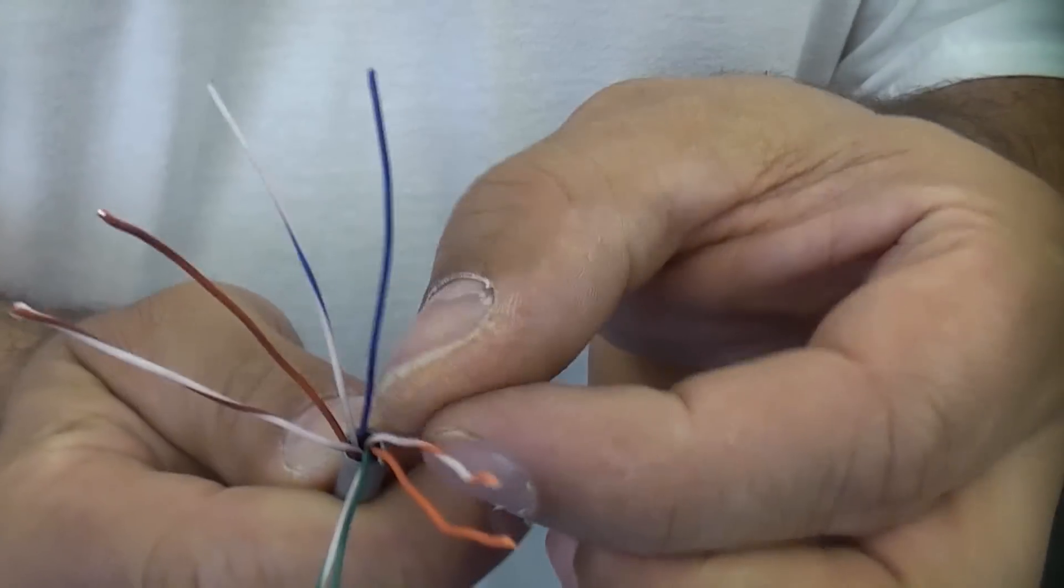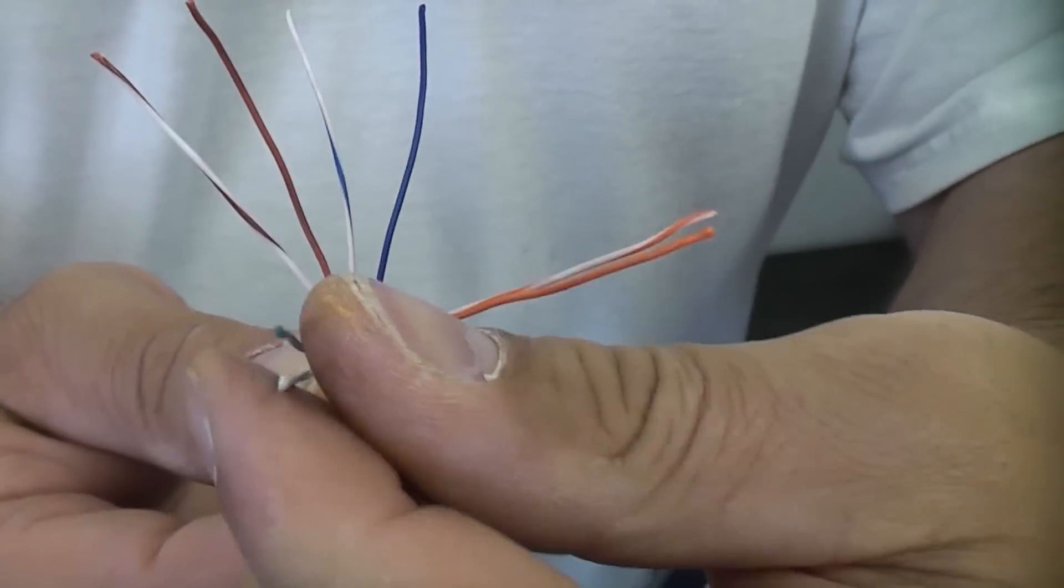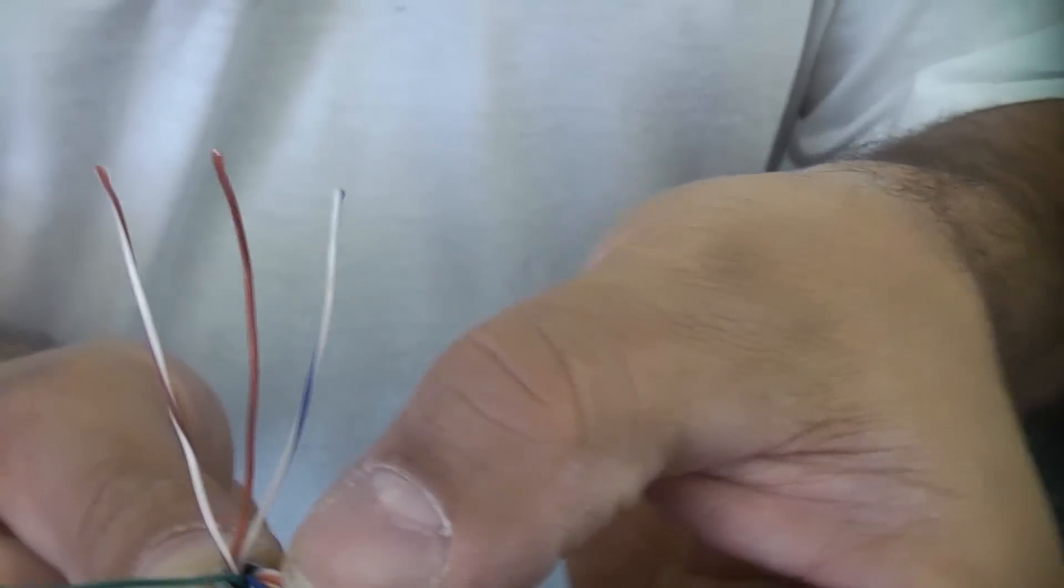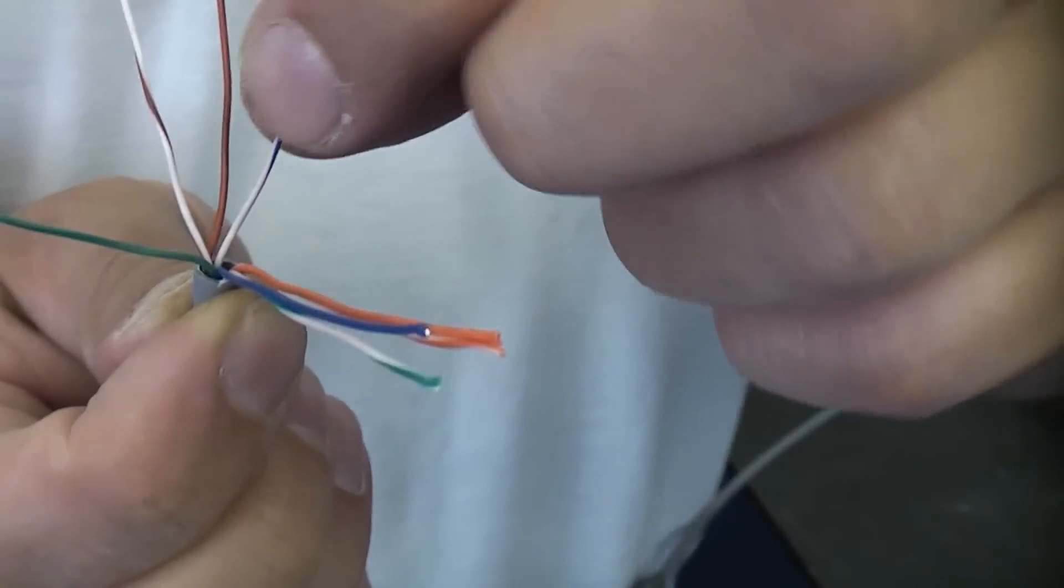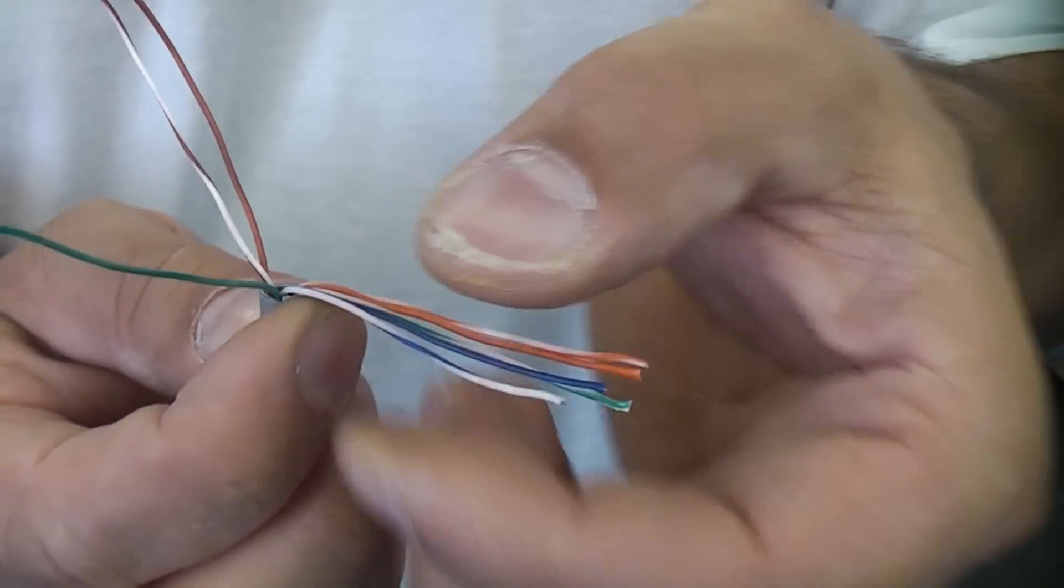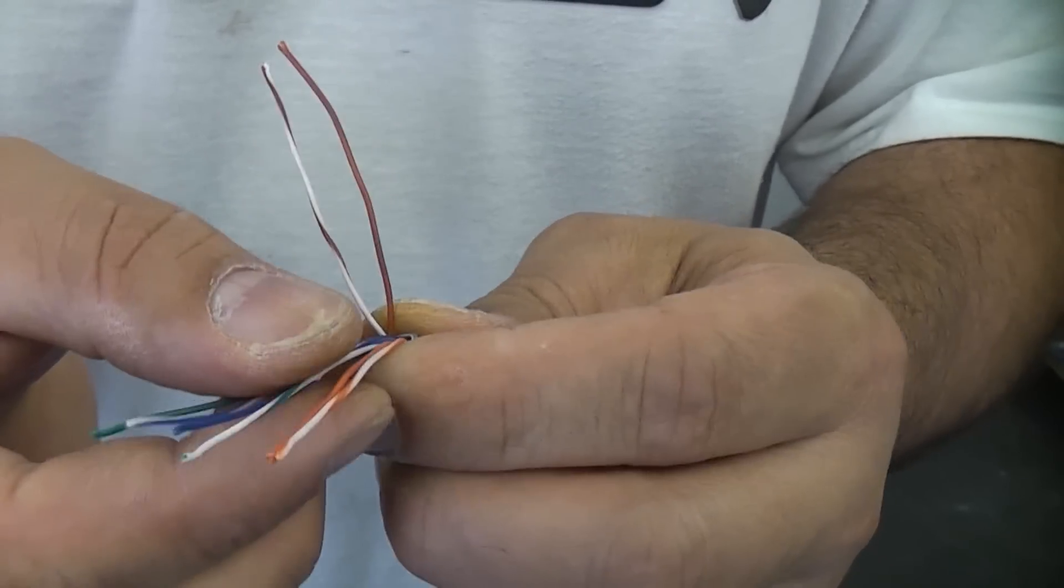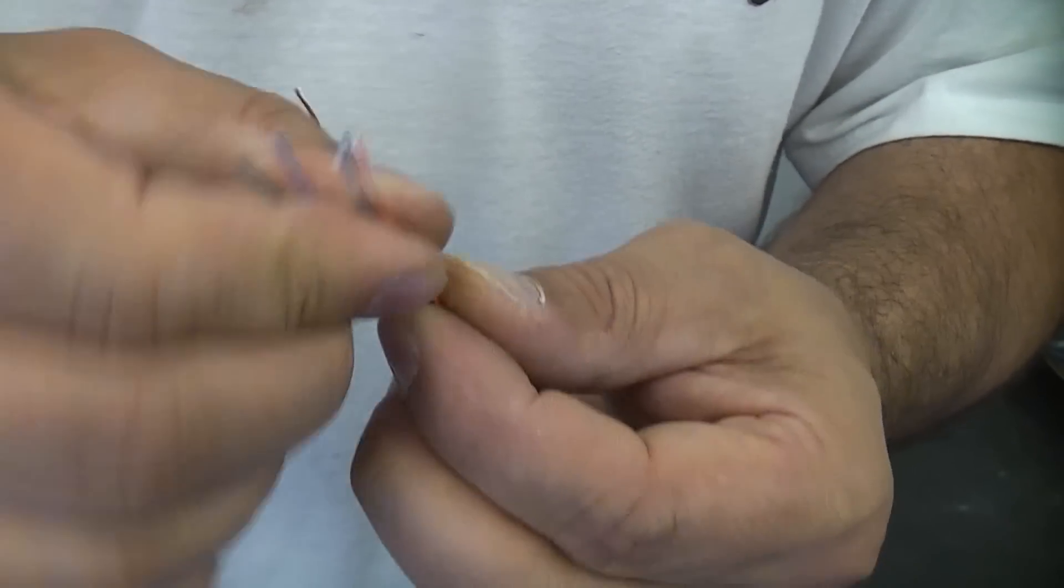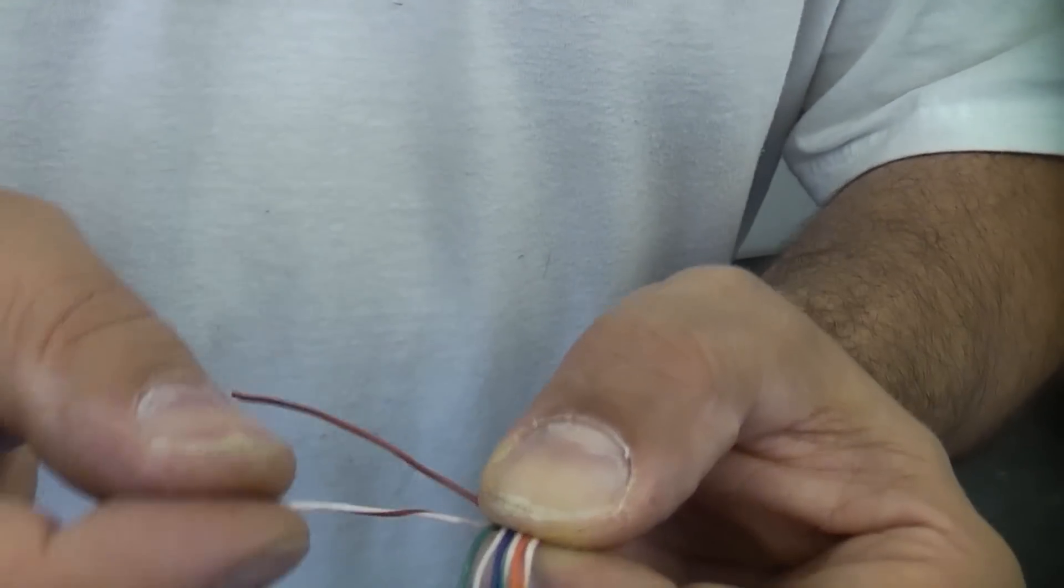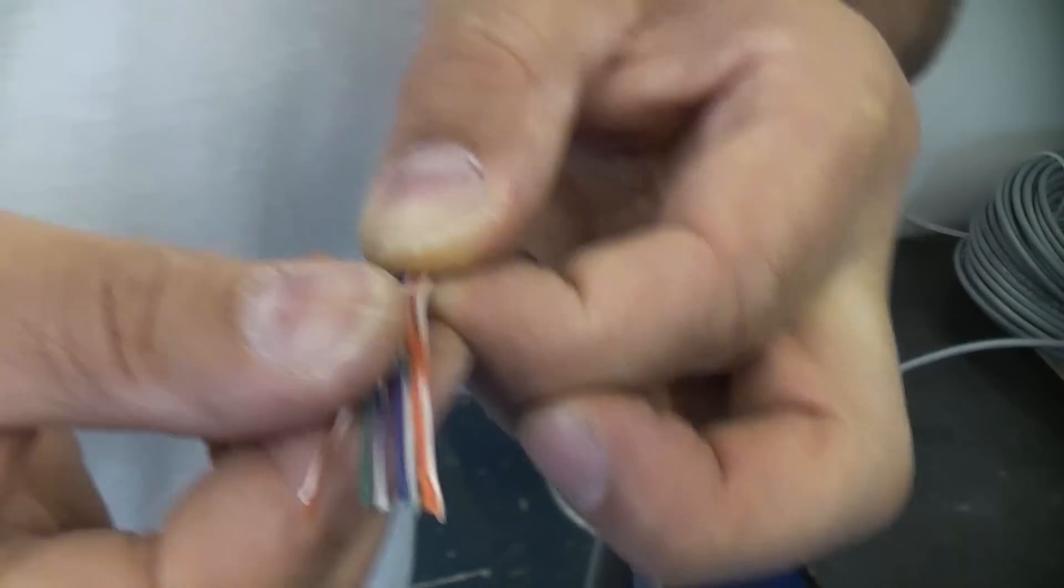Now that we've got the wires straightened out we can now start to put them in the correct order. So on the T568B standard we start off with orange and white and then orange. We then want the green and white, and then the blue, then the blue and white, and then green, and then brown.